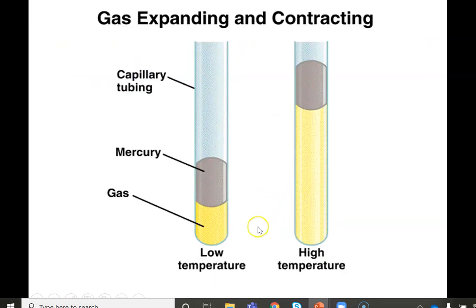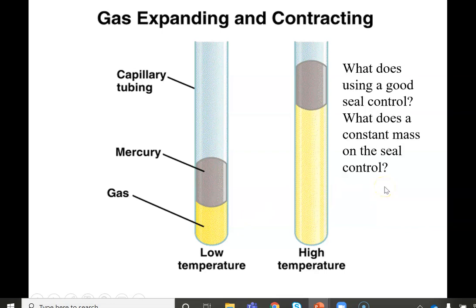So we can look at the relationship between volume and temperature as well. We can see here that a low temperature relates to a low volume. A high temperature gets me a higher volume, which means that this is a directly proportional relationship. As the temperature goes up, the volume goes up. Now it's important, again, that we keep our variables constant. We are using a good seal to make sure that none of the gas is escaping. That way I know that this decrease in the volume isn't because gas is leaking out.